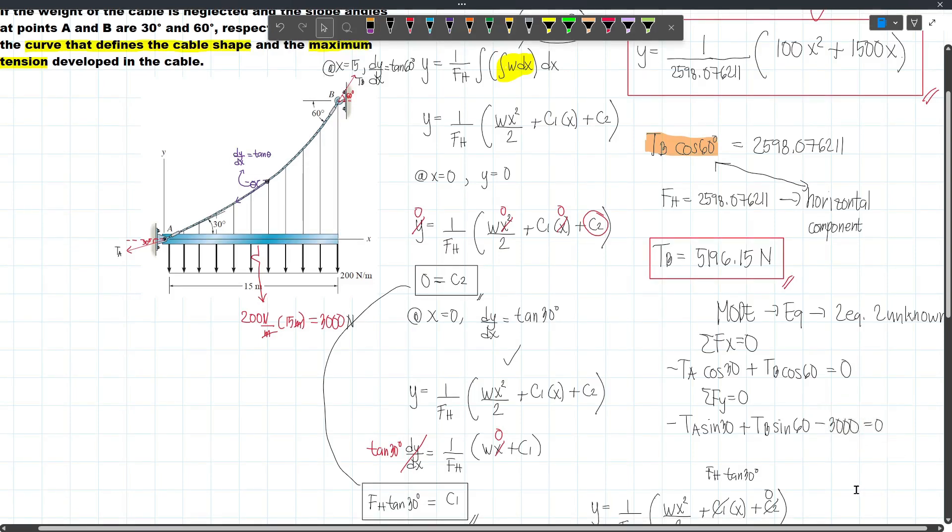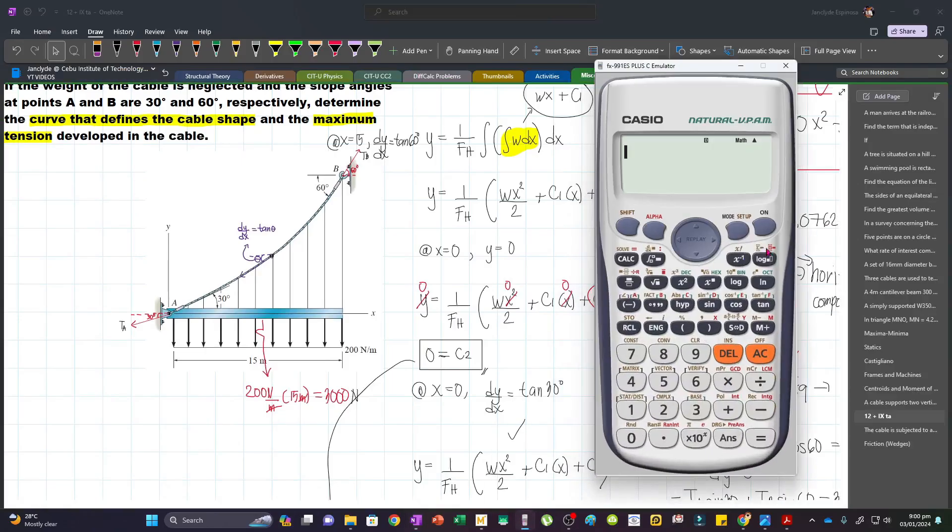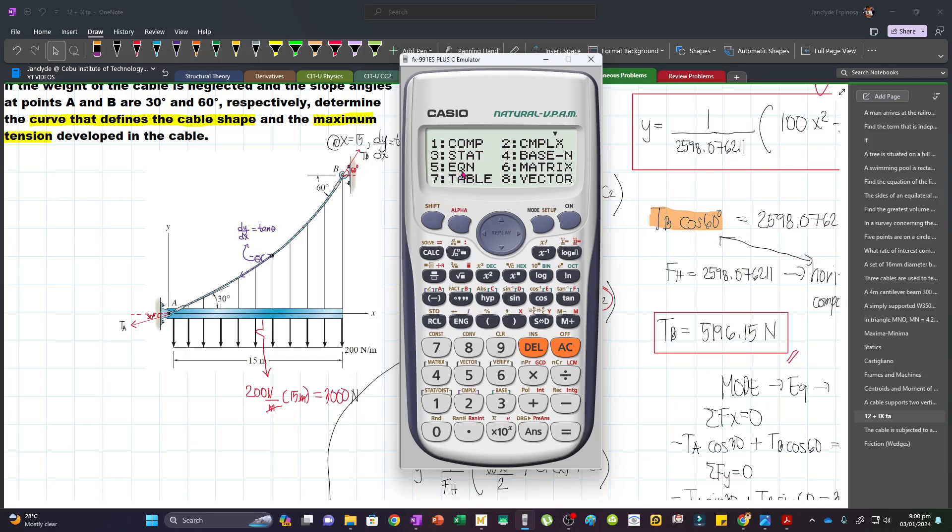However, we need to rearrange this one. Let's go to mode and then press 5 for equation, and then press 1 for two equations, two unknowns. As you can see, the form here is a coefficient times X or the first unknown plus another coefficient times your second unknown, which is Y, is equal to a constant value.